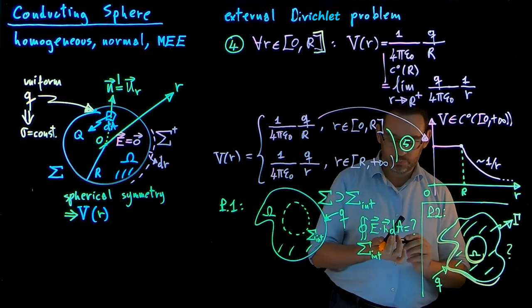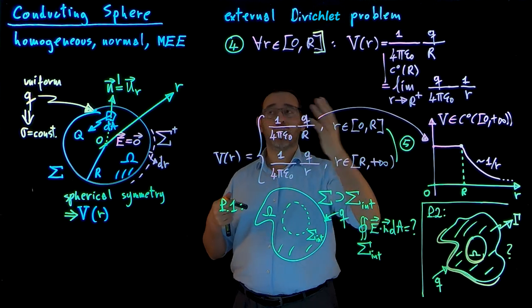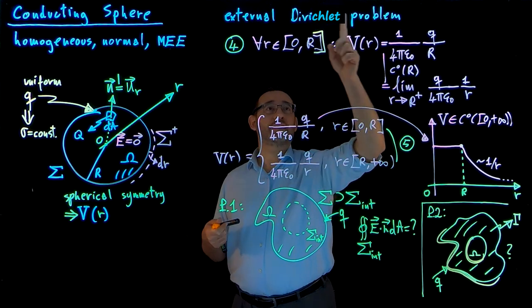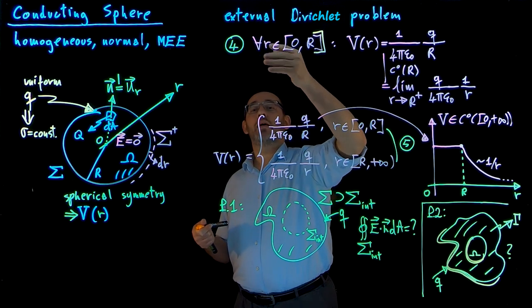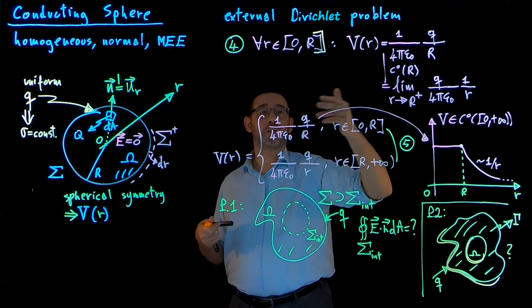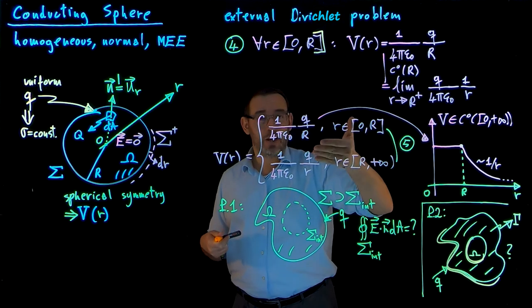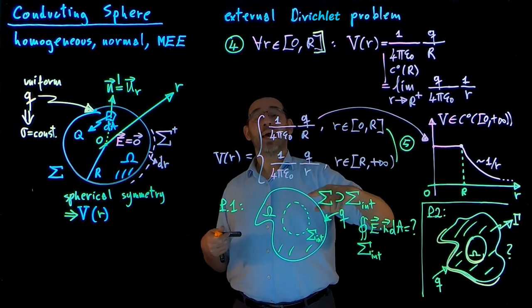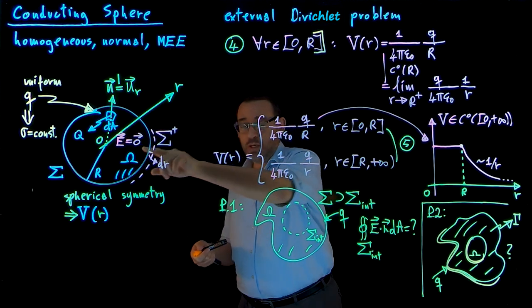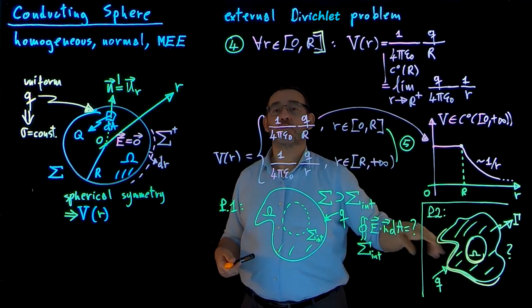To summarize this video: we considered a homogeneous conducting sphere in normal conditions and macroscopic electrostatic equilibrium. We found the electrostatic potential — only a function of r — using the external Dirichlet problem in five steps. First, Laplace equation gives V = alpha/r + beta. Second, normal conditions at infinity give beta = 0. Third, Gauss-Coulomb's theorem gives alpha = q/(4 pi epsilon naught). Fourth, the potential must be constant within the conductor to the surface. Fifth, we verified that the electrostatic potential is continuous everywhere in space. These are the questions for Piazza.